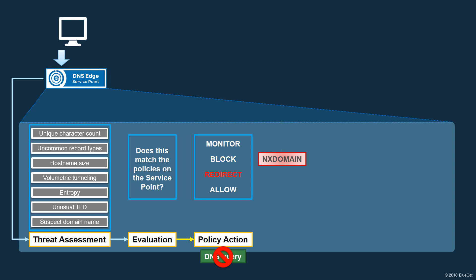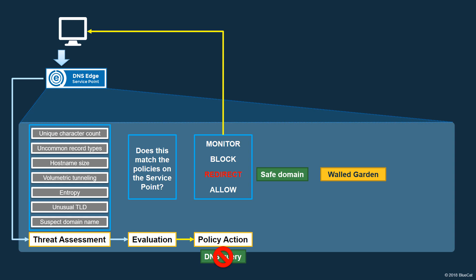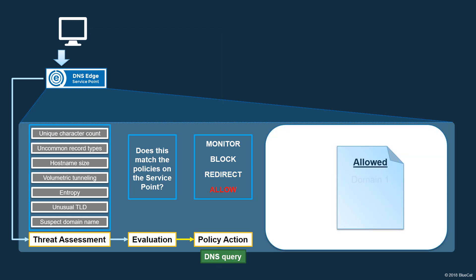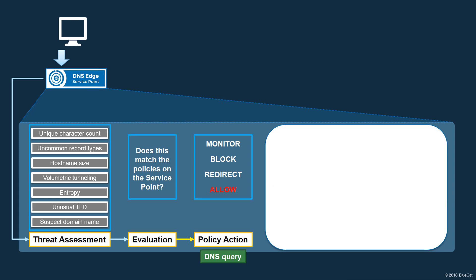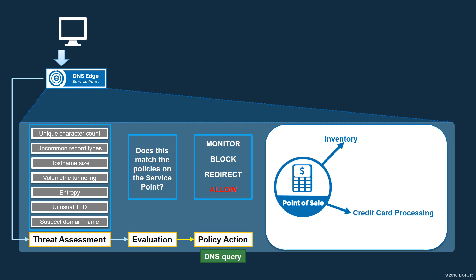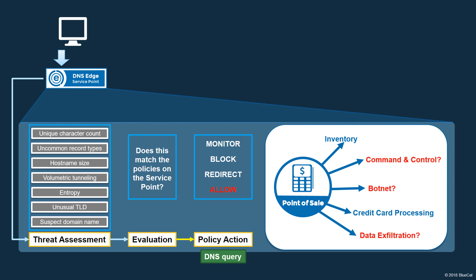The redirect action is an alternative to simply blocking the query. Instead of returning an NXDOMAIN to the client, the Service Point redirects the query to another fully qualified domain name, such as a webpage informing the user that they were about to access a domain or hostname that was not allowed. Such a safe page is also known as a walled garden. The Allow action is the most restrictive of the four policy actions. A policy configured with the Allow action is generally used to restrict a device to a limited number of domain names or hostnames. When the query matches any of the allowed items, it is forwarded to the next-hop DNS server. All other queries are blocked and an NXDOMAIN response is returned to the client. A good use case is a point-of-sale device, which normally should only need to contact a limited number of resources, such as inventory and financial processing systems. Such a device, if compromised, could be directed to send queries to a command-and-control domain, or be used for data exfiltration via tunneling. Restricting queries to a set of domains or hostnames prevents these devices from being used by malicious actors for these purposes.